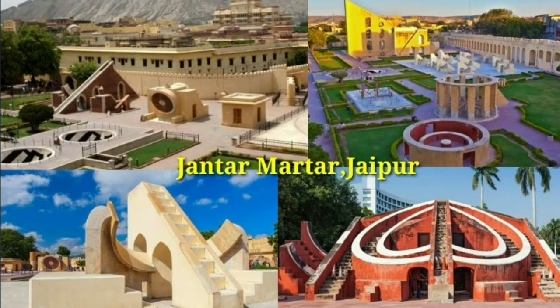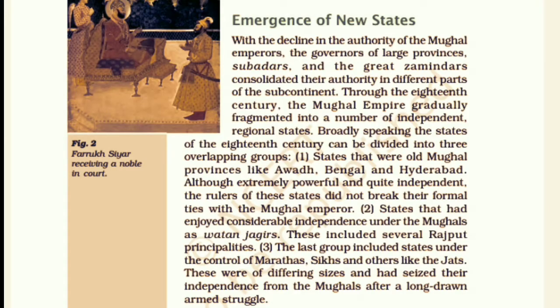Many Rajput kings, particularly those of Amber and Jodhpur, had served under the Mughals with distinction. They got considerable autonomy and were thus called Vatan Jagirs. However, Maratha expansion after 1740 put restrictions on the growth of Rajput expansion. The last group included states under the control of the Marathas, Sikhs and others like the Jats — states of differing sizes that had seized their independence from the Mughals after a long drawn armed struggle.